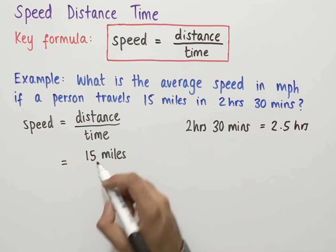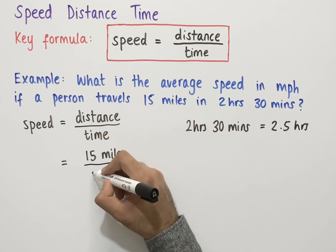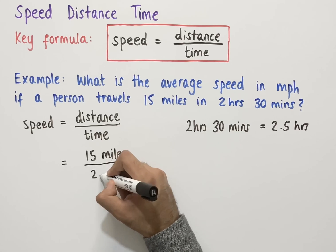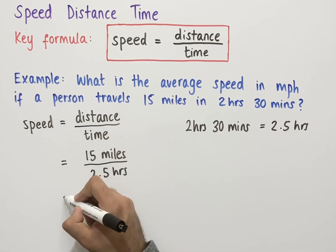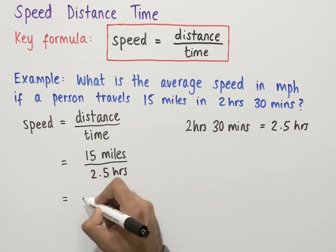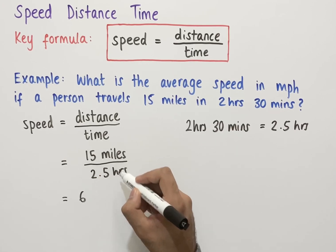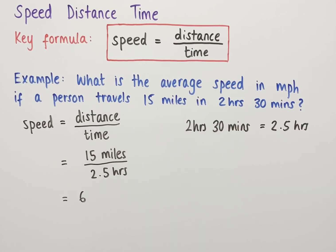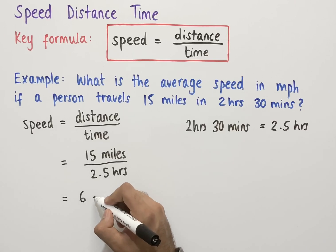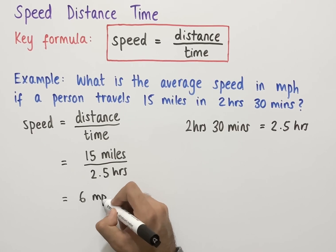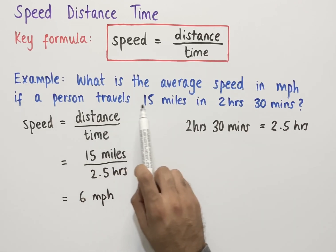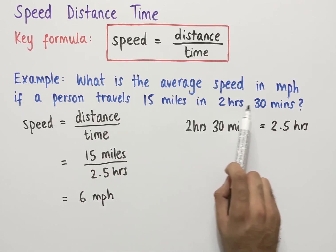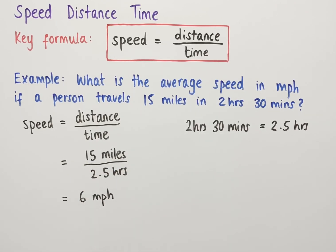So we use 2.5 hours in our calculation. We have 15 miles over 2.5 hours. 15 divided by 2.5 equals 6, and miles divided by hours gives units of miles per hour. So the average speed is 6 miles per hour.